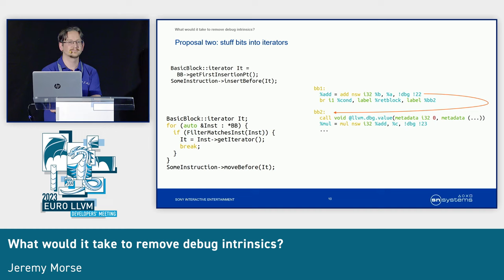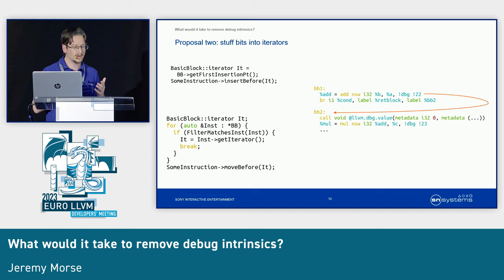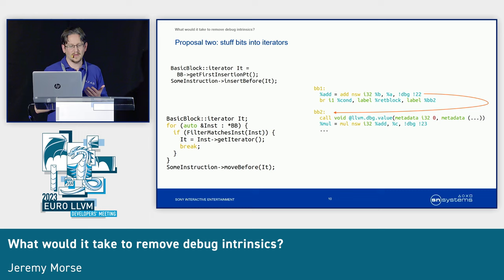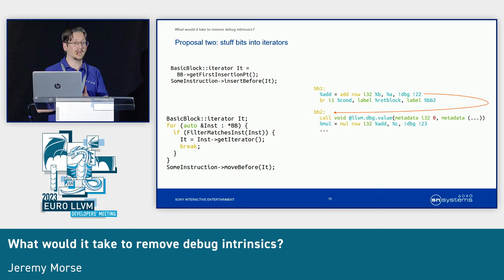Question: Currently the debug info skipping is mixed up with some pseudo probe functionality — what would happen with that? I've never seen a pseudoprobe, but I understand it has something to do with profiling information disambiguation. If it can obey the same principle of preserving transformation information and be updated automatically using that information, then it can just act like a debug intrinsic and be stored in the same way. It might become trickier if it turns out they need to be manually updated at various parts of the compiler, but I'm hopeful they can be treated in the same way as debug intrinsics.